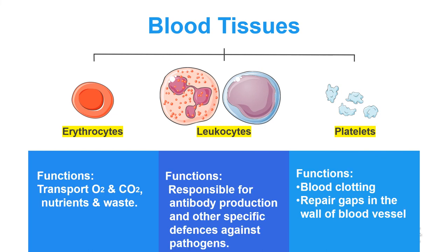Red blood cells contain hemoglobin, which carries oxygen from the lungs to the rest of the body and returns carbon dioxide from the body to the lungs to be exhaled. White blood cells protect the body from infection; leukocytes protect against invading microorganisms and cells with mutated DNA, and clean up debris. Platelets are critical to homeostasis — the stoppage of blood flow following vessel damage — and secrete growth factors essential for the growth and repair of tissue, particularly connective tissue.